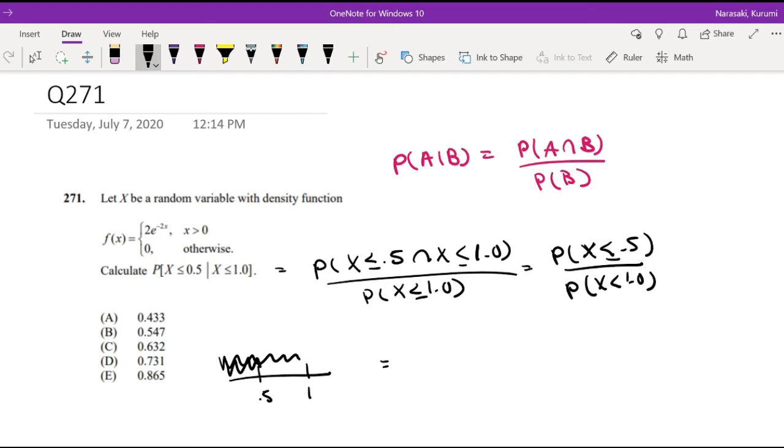So then what is the probability that x is less than 0.5? What is it just equal to? Integration from 0 to half. 0.5 is just half. 2e to the negative 2x dx divided by integration of 0 to 1 of 2e to the negative 2x dx.